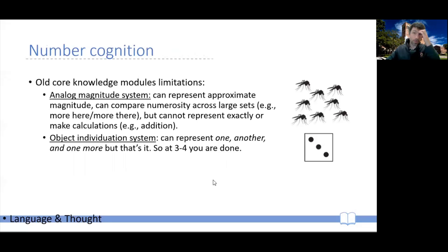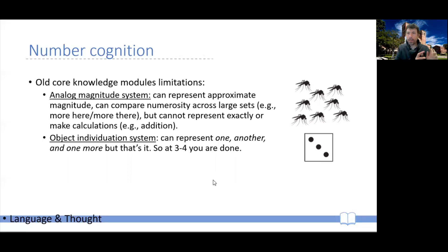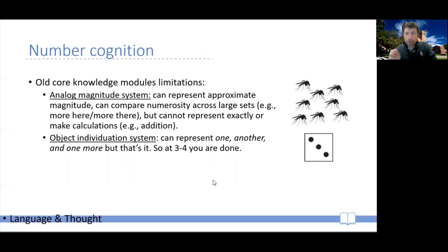This shows that even in the absence of language — in other species or in young pre-linguistic human beings — we do have these abilities. We have the ability to understand numerosity, but as a fuzzy concept. We have the ability to understand sets in a fuzzy way, and we can see individuals: one, two, three — very small, exact calculation.